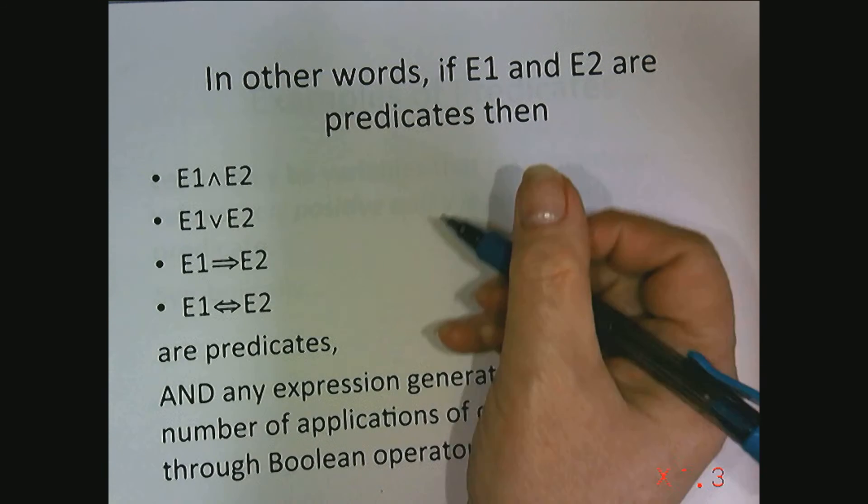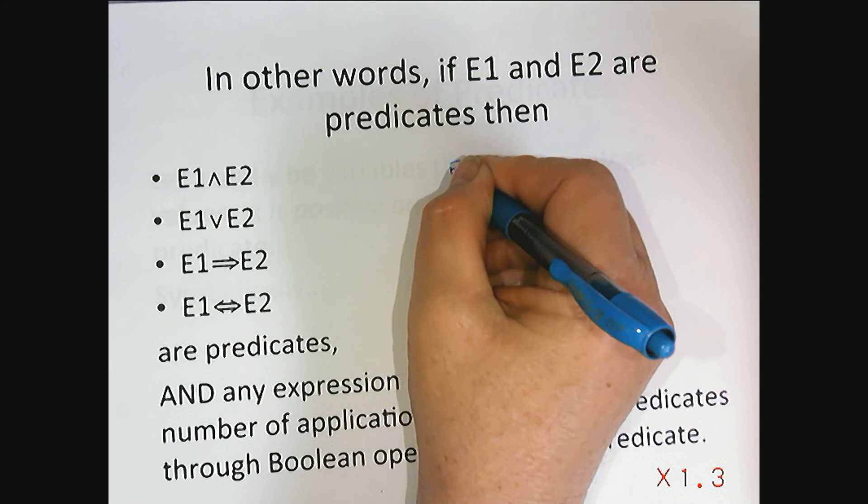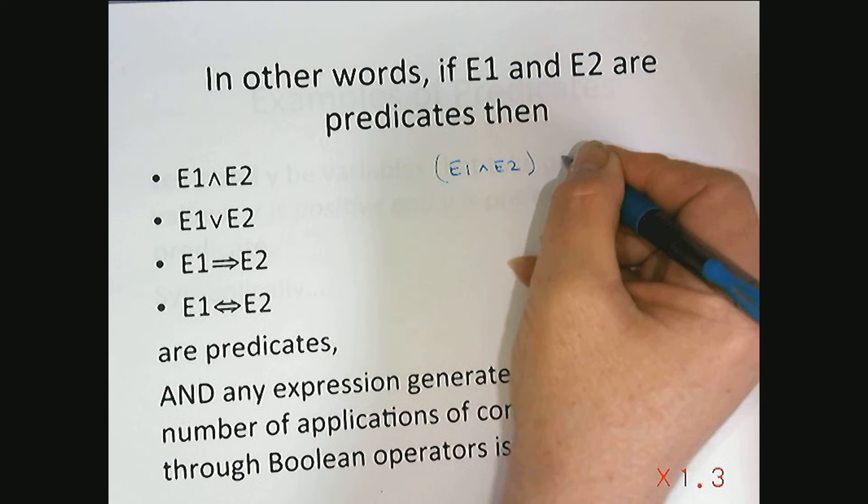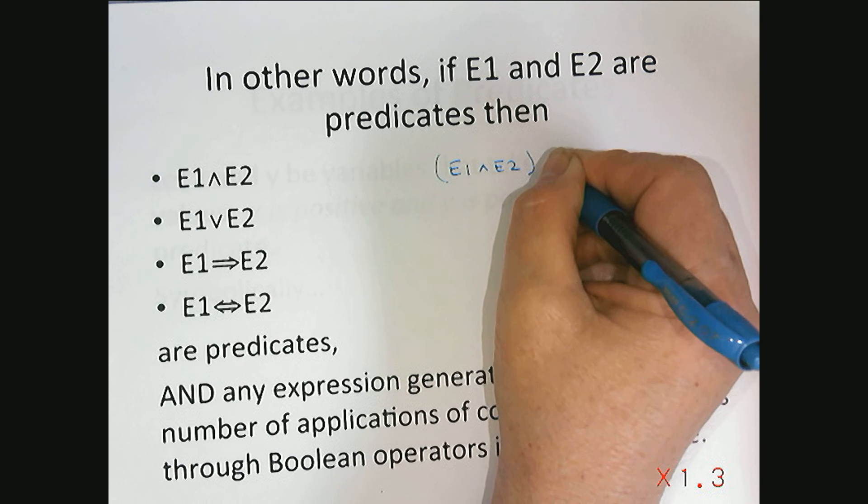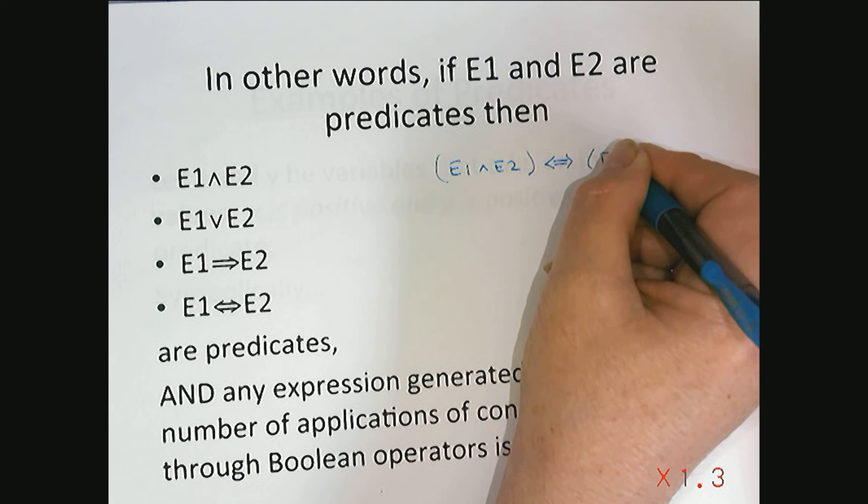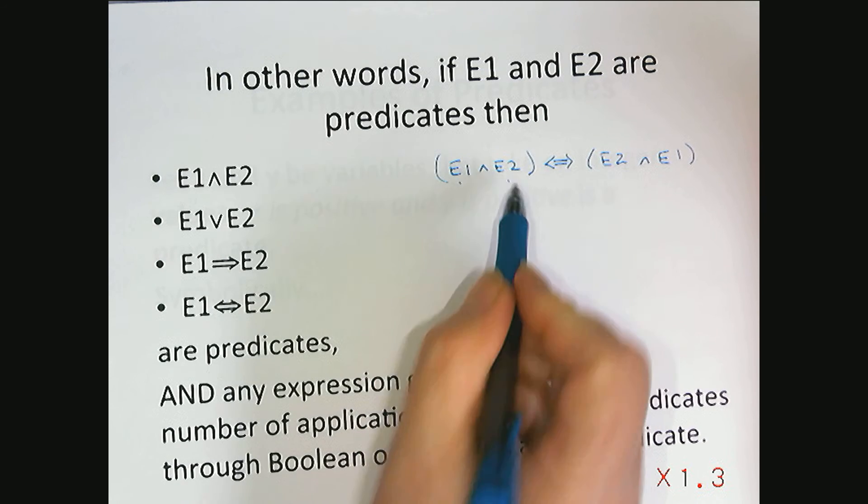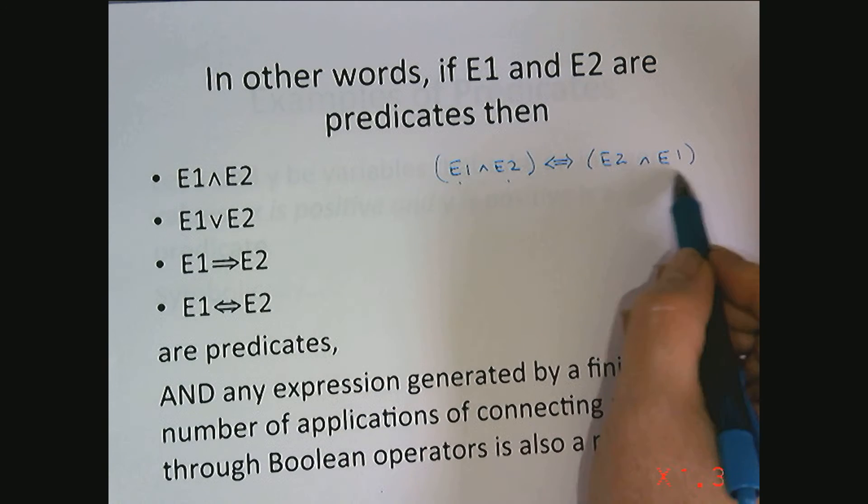For example, if we have E1 and E2 is equivalent to E2 and E1, where E1 and E2 are predicates, the result here is also going to be a predicate.